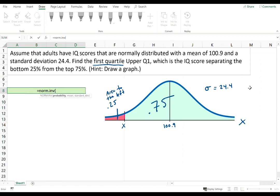So probability, the area to the left of the X value that we want, is 0.25. The mean is 100.9, and the standard deviation is 24.4, and that should do it.